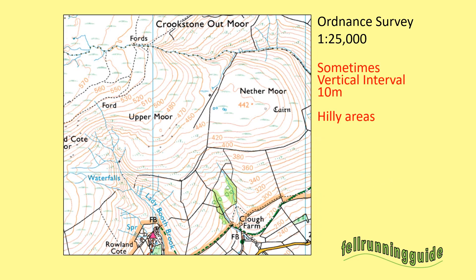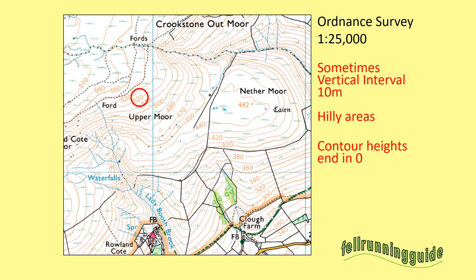But also on Ordnance Survey, in hillier areas the contour interval is 10 metres. So the contours here always have a zero as the last digit. You can see here 350, 360, 370, 380, and so on. You can also see 500, 510, 520, 530, etc.